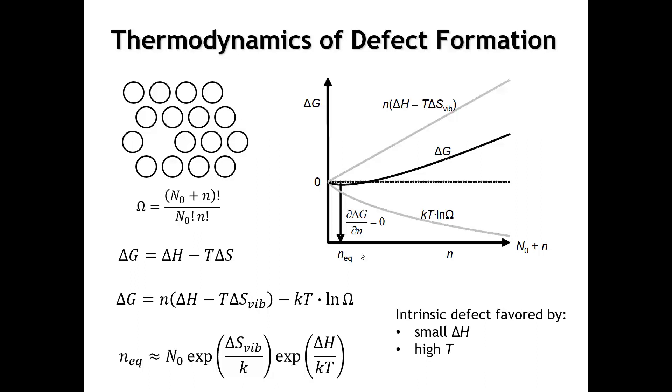And maybe the biggest takeaway lesson here is that it is thermodynamically favorable for there to be defects in a crystal at some level. Now, if the bonding is very strong, and you lose a lot of the bonding when you go to the surface, that concentration of defects might be very, very small.